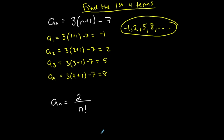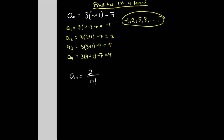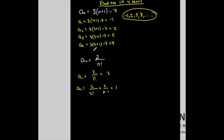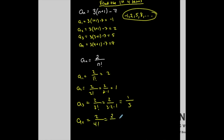Here I have a sequence represented explicitly as 2 over n factorial. I want to find the first four terms. a₁ is two over one factorial, which is two over one, so two. a₂ is two over two factorial — two over two times one is two over two, which is one. a₃ is two over three factorial — two over three times two times one is two over six, or one-third. a₄ is two over four factorial — four times three is twelve, times two is twenty-four, times one is twenty-four, so two over twenty-four is one-twelfth. The first four terms are: two, one, one-third, one-twelfth.